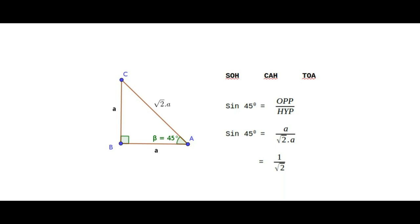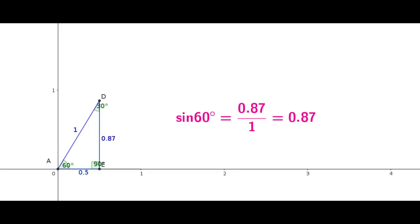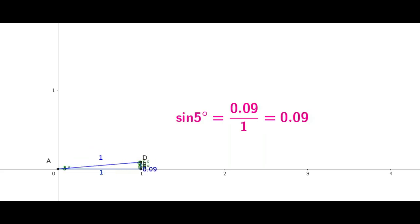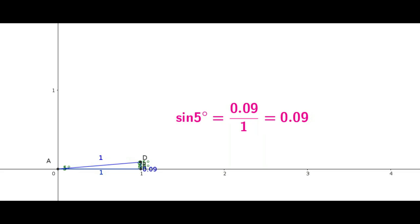It is very interesting — what happens if the angle becomes 0? Now I am decreasing the value of the angle from 60 degrees to 0 degrees. As alpha approaches 0 degrees, you may observe that the hypotenuse and adjacent are becoming equal and the opposite is disappearing. That means the length of the opposite is 0. Now the ratio for sine 0 degree is opposite over hypotenuse, where opposite is 0 and hypotenuse is 1, so the value of sine 0 degree is 0.